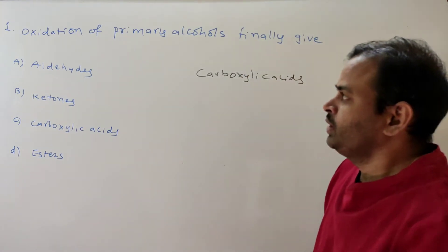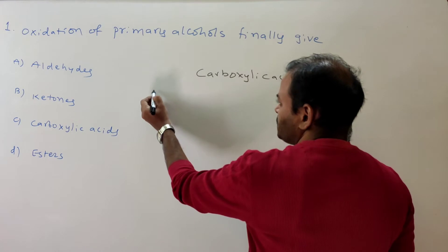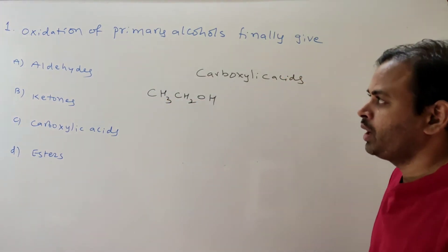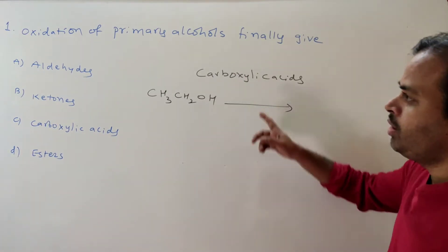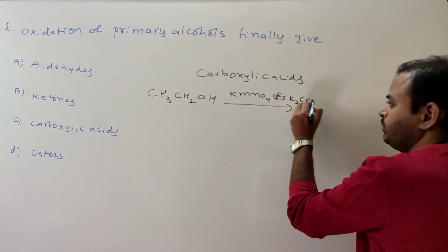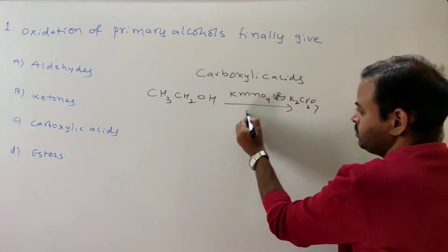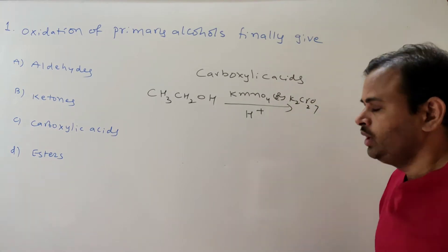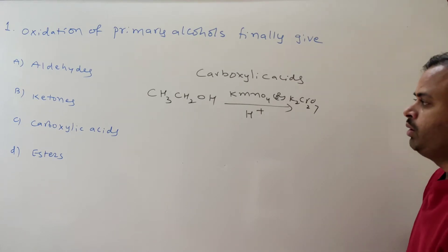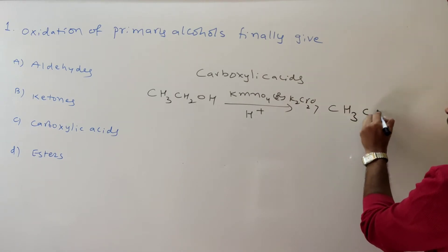First question: oxidation of primary alcohols finally gives what? Primary alcohols — for example, CH3CH2OH — undergo oxidation in presence of KMnO4 or K2Cr2O7, meaning acidic KMnO4 or acidic K2Cr2O7, or even neutral medium KMnO4 or K2Cr2O7. The primary alcohol converts into the corresponding aldehyde.